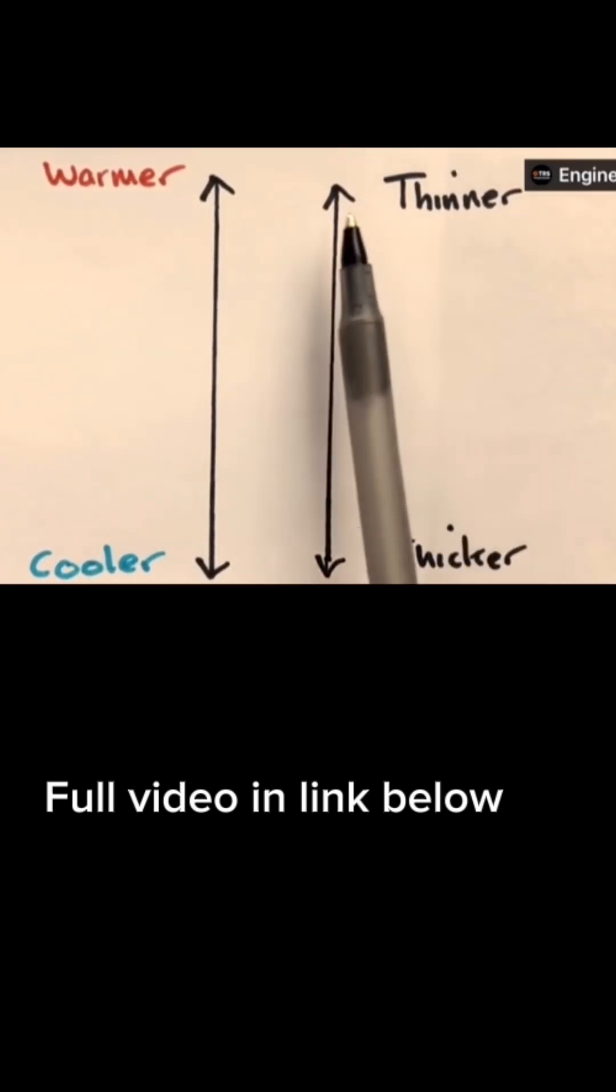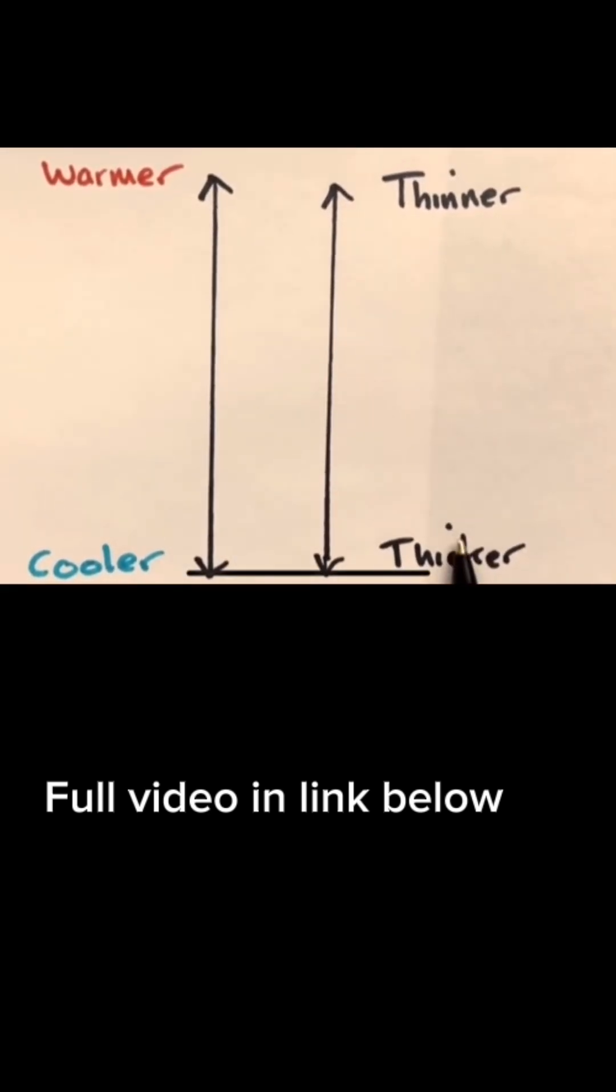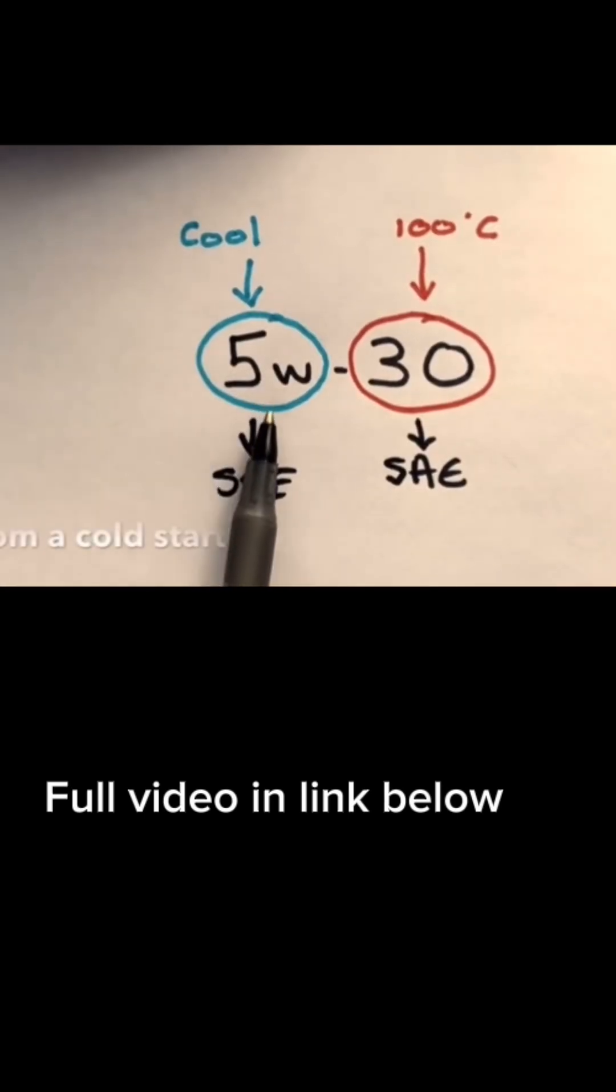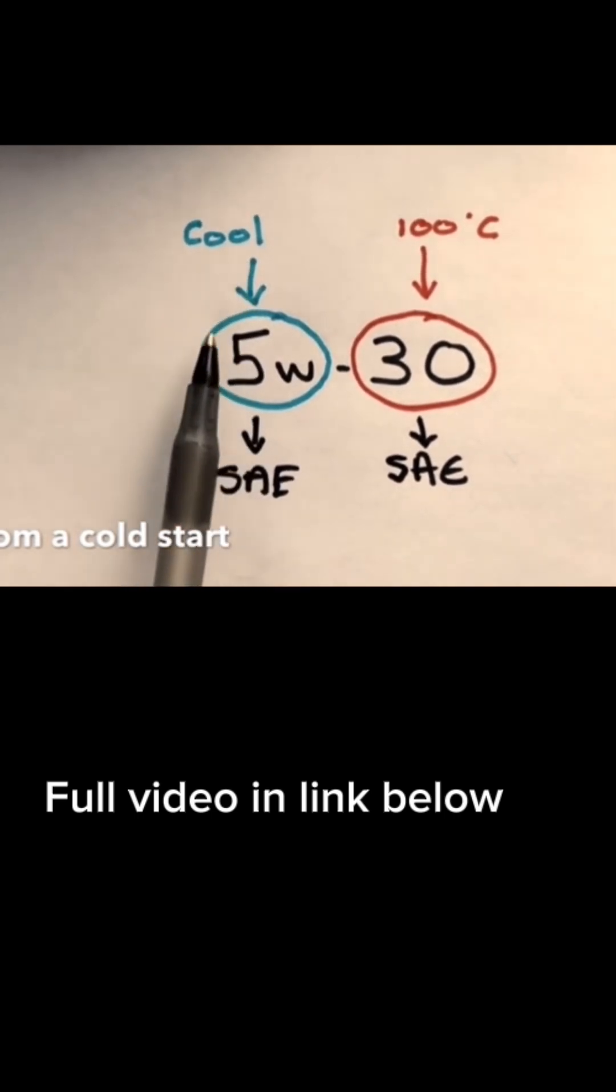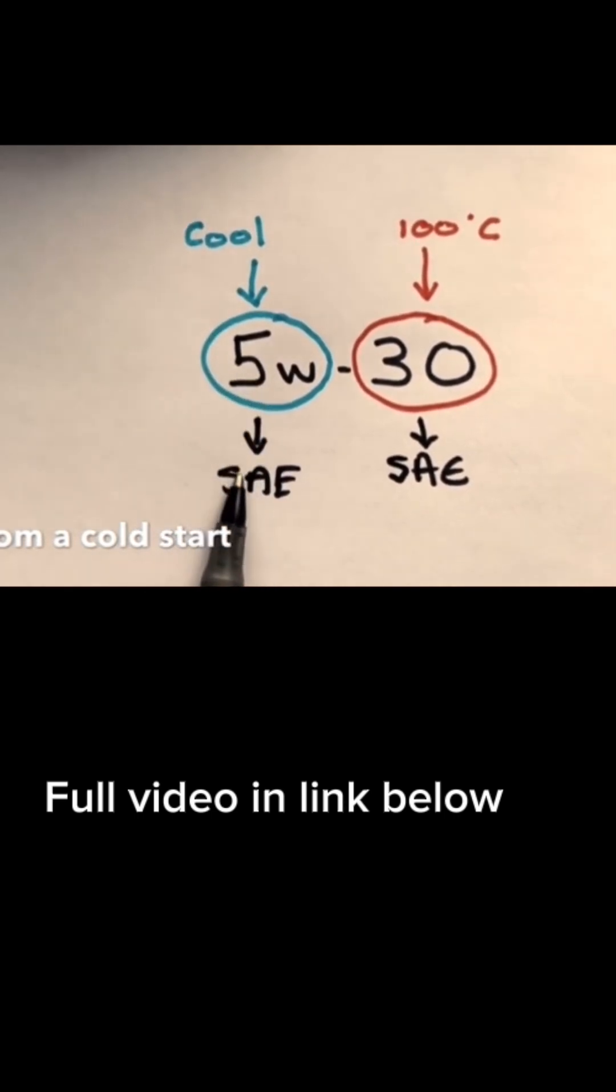The warmer it gets, the thinner it gets, and the cooler it gets, the thicker it gets. But the clever thing about our oil is its chemical composition makes it so that in cooler conditions, it actually acts like an SAE 5.